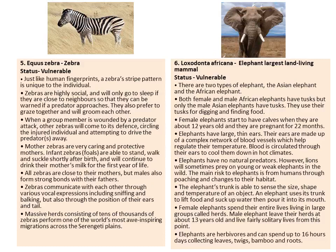Next is the Zebra, Equus zebra, which is vulnerable. Just like human fingerprints, their striped patterns are unique to each individual. They are highly social and can sleep only when neighbours are close to them. If a family group member is wounded, others encircle the injured one and attempt to drive predators away. Mother zebras are very caring and protective. All zebras are close to their mothers, but males have strong bonds with their fathers. Zebras communicate through various sounds, including sniffing and barking. Massive herds of tens of thousands of zebras perform one of the world's most awe-inspiring migrations across the Serengeti Plains.